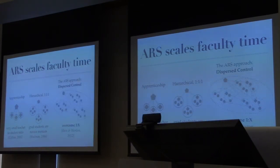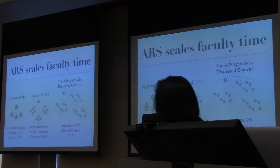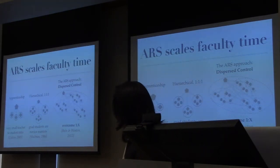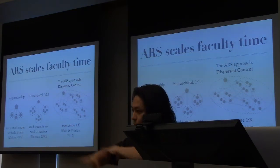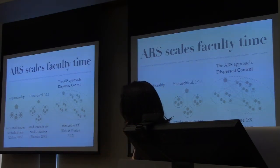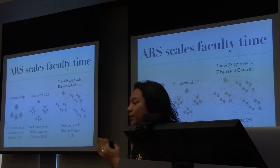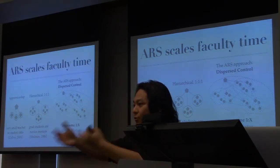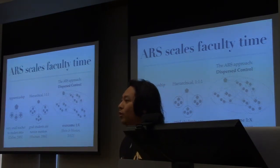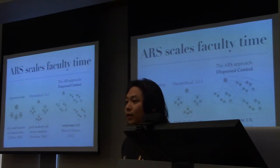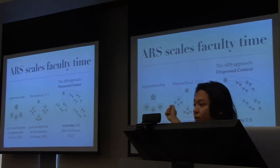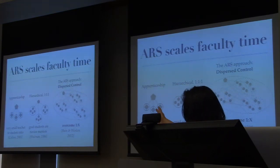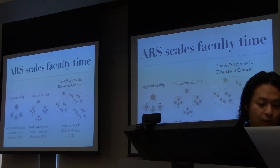What we argue for in the ARS approach — the 1X challenge being one faculty with many students — is that we need to disperse control of the mentoring, not only from the faculty's perspective, but across the network of students within this community. This is really the only way conceptually that we're going to scale. Then the question is: what do those edges look like, and what are those interactions and groupings that we come up with?